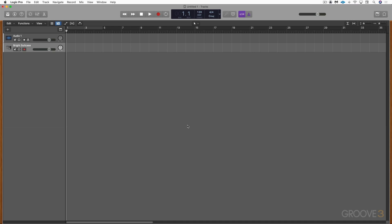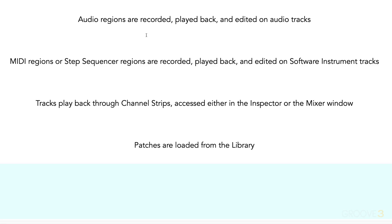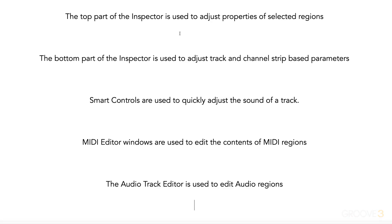Here's a quick review: audio regions are recorded, edited, and played on audio tracks; MIDI regions and step sequencer regions are recorded, edited, and played on software instrument tracks. Both types play back through channel strips accessible in the Inspector or the Mixer. Patches or sounds are loaded from the Library. The top part of the Inspector adjusts parameters for selected regions; the bottom part adjusts tracks and channel strips. Smart Controls quickly adjust the sound of the track. MIDI editors edit MIDI region contents, and the audio track editor edits audio regions. We'll see you for more in the next video.